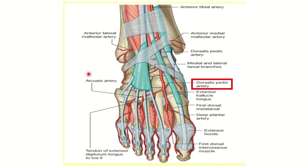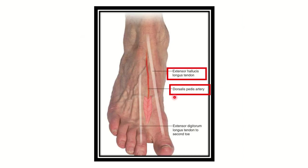This side is the medial side and this side is the lateral side. On the lateral side there is a tendinous structure which attaches to the terminal phalanx of the toe. The medial structure relative to the dorsalis pedis artery is the tendon of extensor hallucis longus.